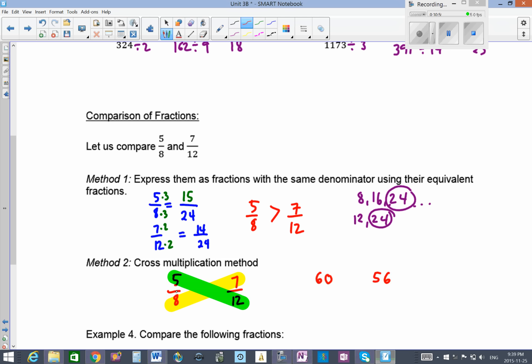We are comparing 5 eighths and 7 over 12. 5 eighths is kind of associated with the number 60, and 7 over 12 is associated with the number 56. In terms of 60 over 56, we say that 60 is bigger than 56. So we can, as a strategy, say now that 5 over 8 is greater than 7 over 12.